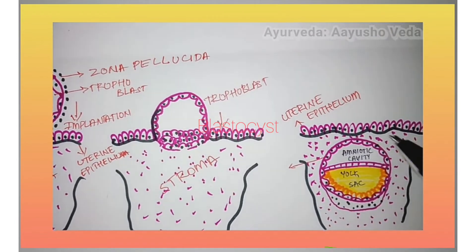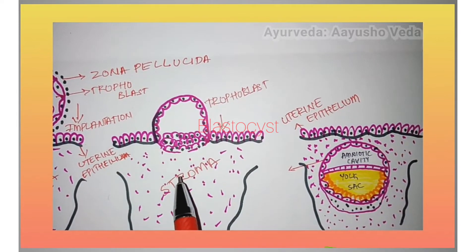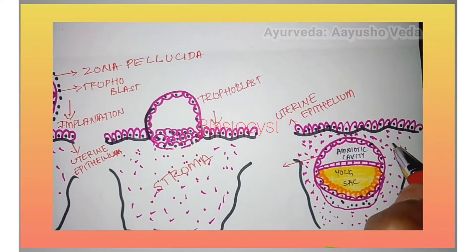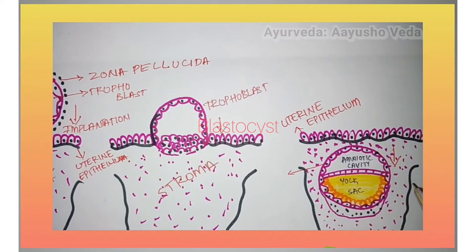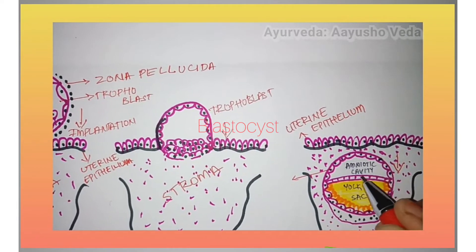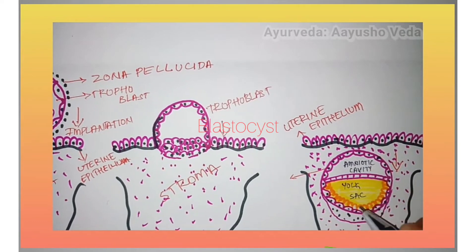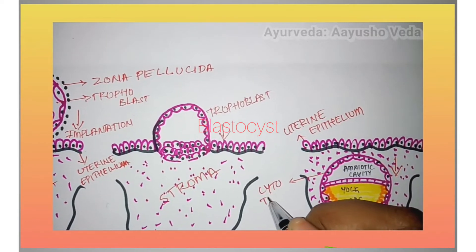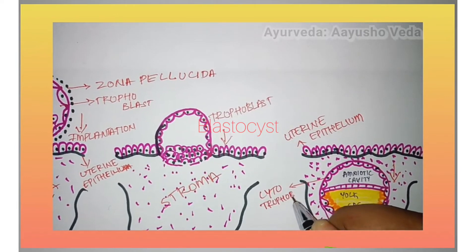the blastocyst, which has the trophoblastic cells as its outer covering, will be completely embedded into the uterine wall — that is, into the endometrium. This is called interstitial implantation.